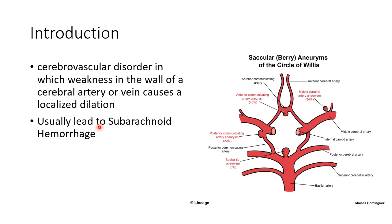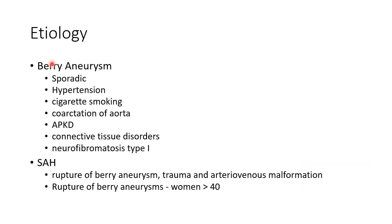Brain aneurysms usually lead to subarachnoid hemorrhage. Aneurysms occur sporadically. Risk factors include hypertension, cigarette smoking, coarctation of aorta, polycystic kidney disease, connective tissue disorders, and neurofibromatosis type 1. Subarachnoid hemorrhage can occur due to rupture of brain aneurysm, trauma, and arteriovenous malformation. Rupture of aneurysms usually occurs in women greater than 40 years of age.